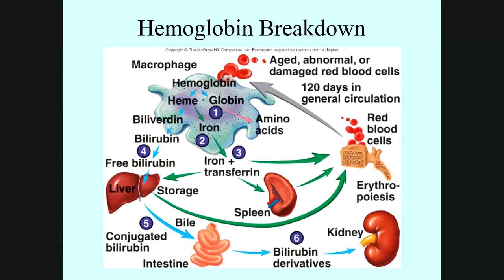This is another slide summarizing the recycling of the red cells. Red cells are produced by the bone marrow, circulate for 120 days in general circulation. Aged, abnormal, or damaged red cells can be engulfed by the macrophage in the liver, spleen, or kidney. Once in the macrophage, they are digested, giving amino acids that can be recycled to produce more protein for the red blood cells.